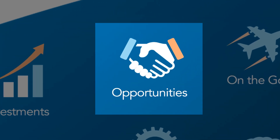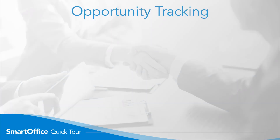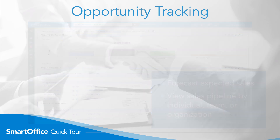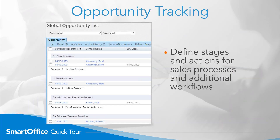Opportunities allow you to easily track your sales pipeline. With opportunity tracking, you can forecast expected sales and easily determine the health of your sales pipeline by individual, team, or organization. This feature allows you to define stages and actions for not only your sales process, but also for other office workflows and processes. The result is improved communication, smoother handoffs, and increased visibility.